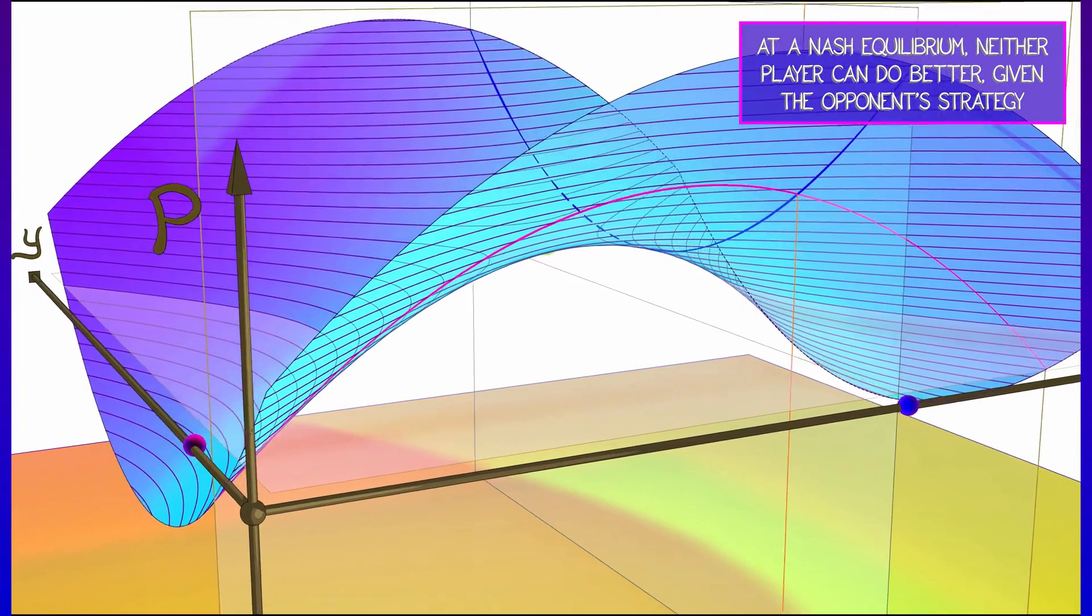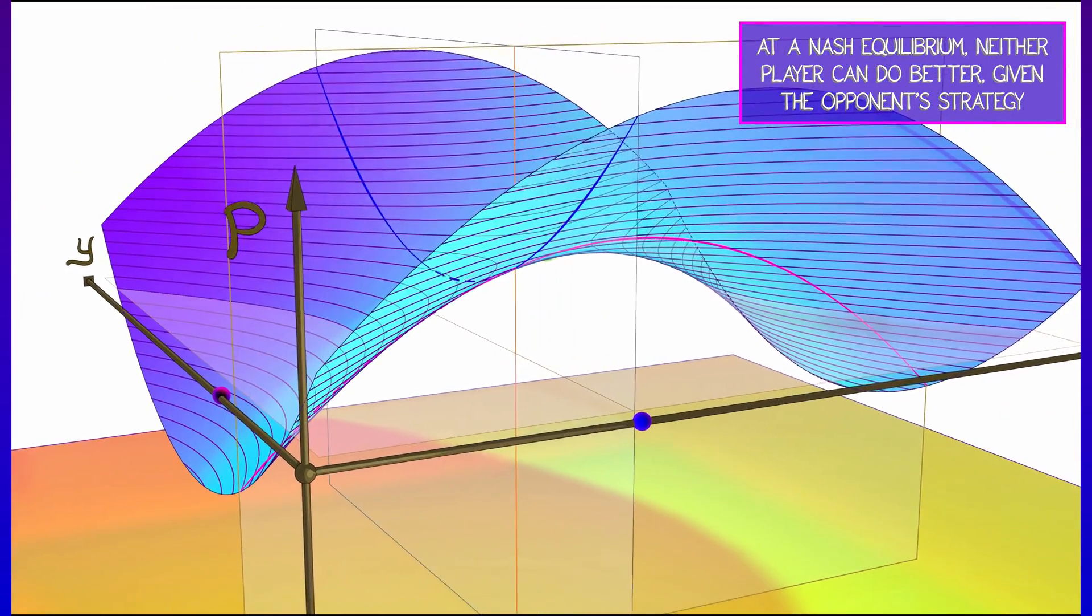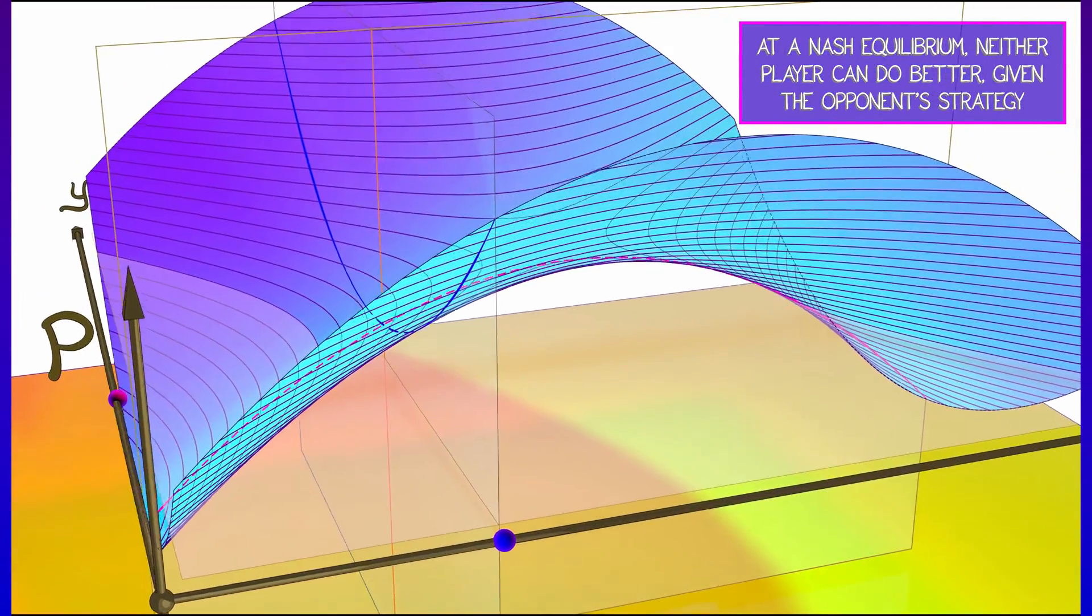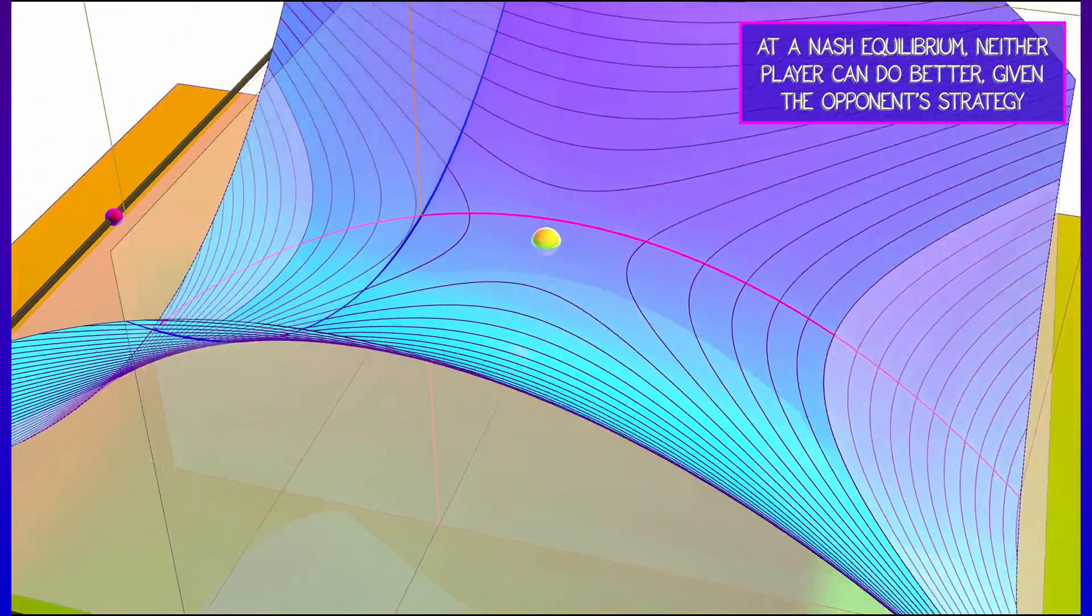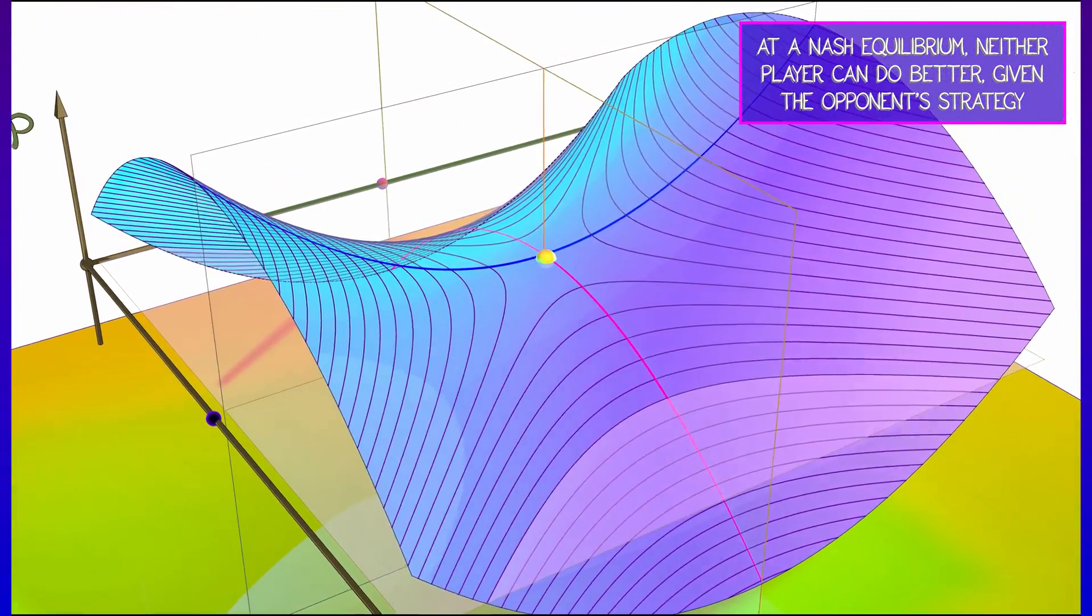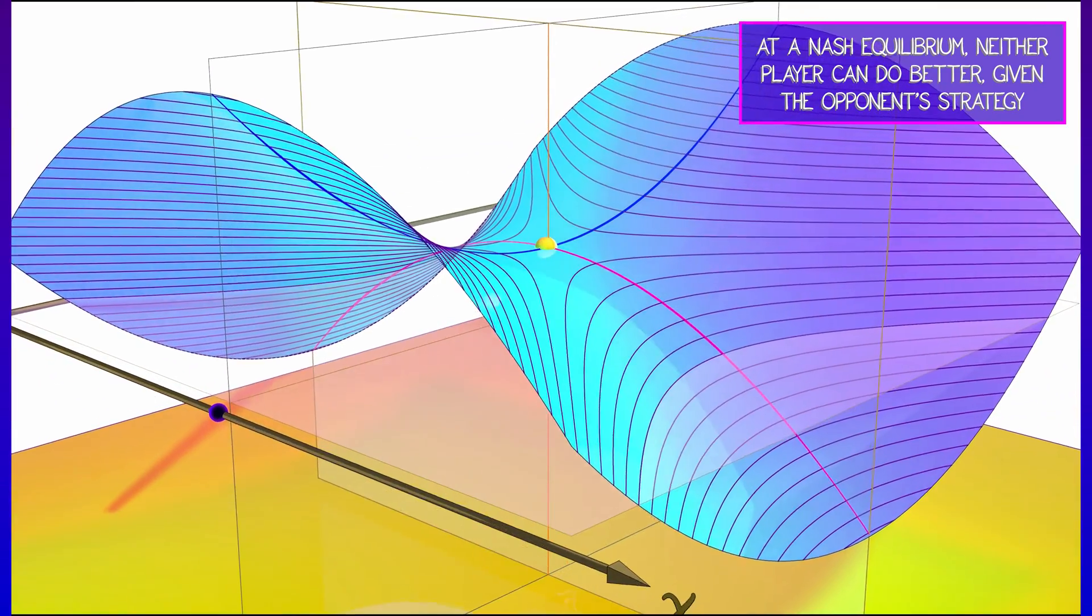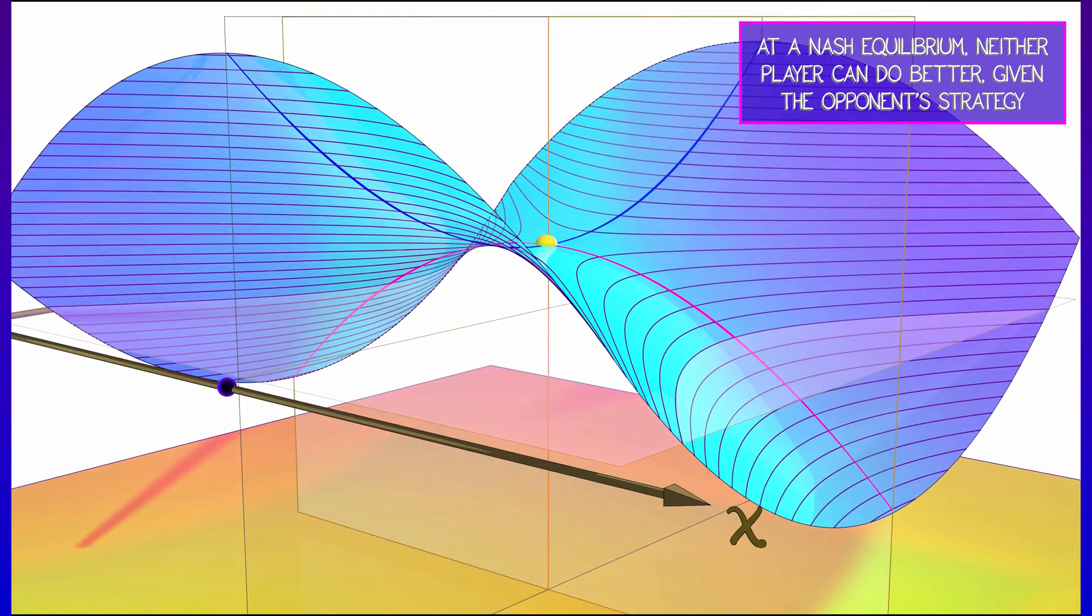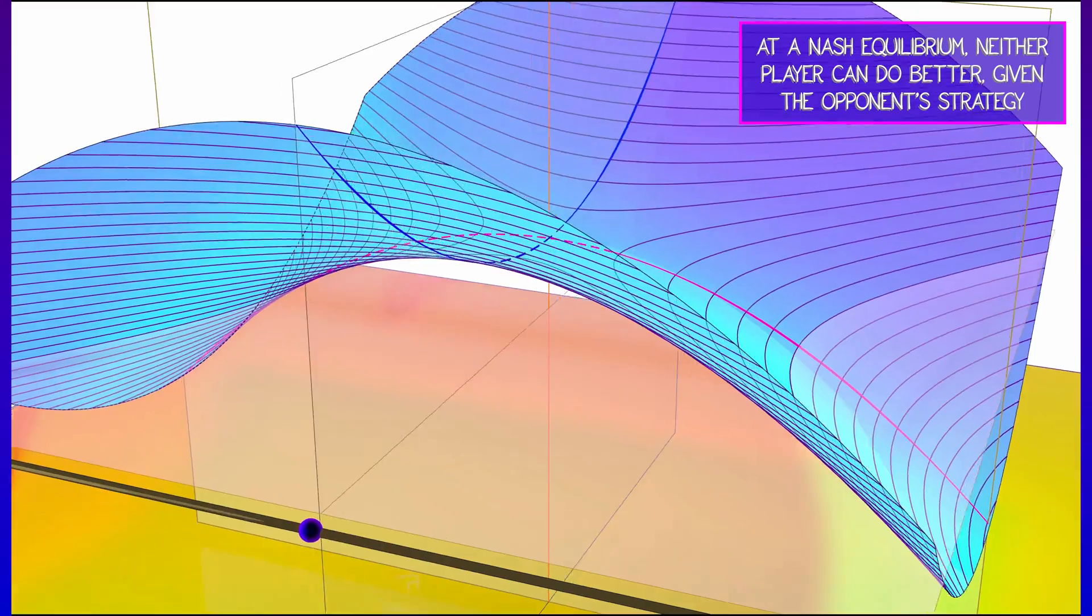then you can change yours in order to improve, in order to do better. But at a Nash equilibrium, at a saddle point, from player one's perspective you're at a maximum, from player two's perspective you're at a minimum.